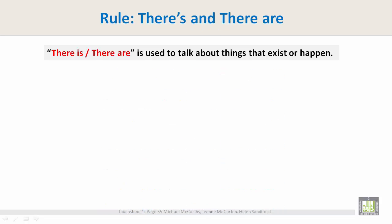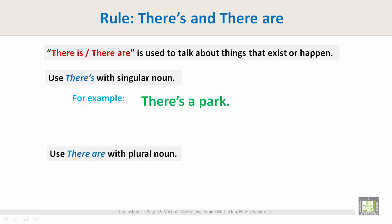Rule for there is and there are. For example, there's a park. Use there's with a singular noun. Use there are with plural nouns. For example, there are some parks.